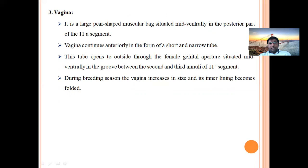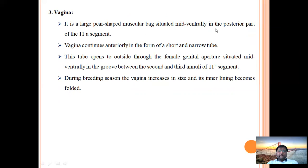The third part of the female reproductive organ is the vagina. It is a large, pear-shaped muscular sac situated mid-ventrally in the posterior part of the eleventh segment. The vagina continues anteriorly as a short narrow tube that opens to the outside through a female genital aperture situated mid-ventrally in the groove between the second and third annuli of the eleventh segment. During the breeding season, the vagina increases in size and its inner lining becomes folded.